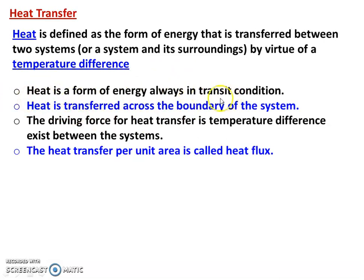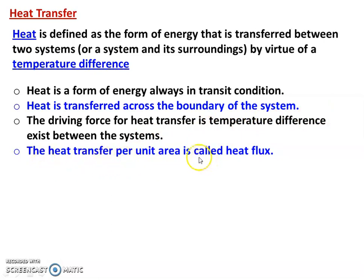Heat is a form of energy always in transit condition. Heat is transferred across the boundary of the system — it is crossing the boundary of the system. Heat flux is another terminology: heat transfer per unit area. Heat flux is small q; heat is capital Q. Capital Q divided by A equals small q.